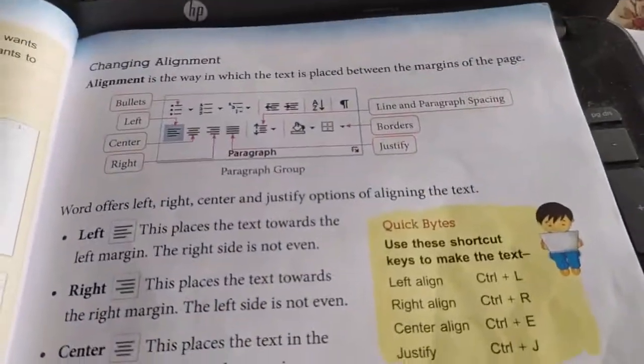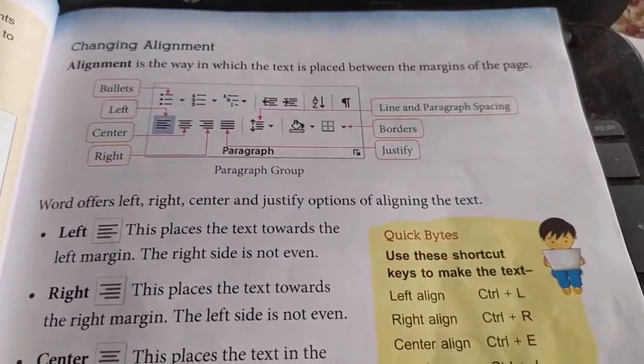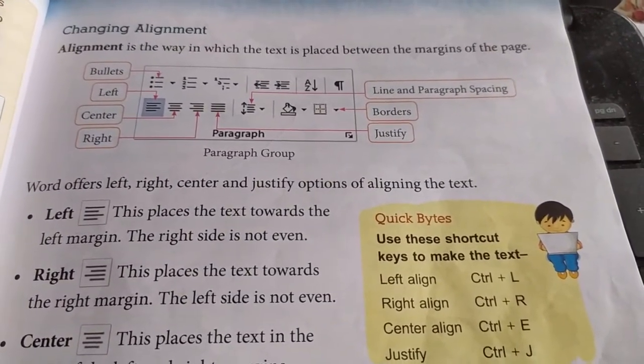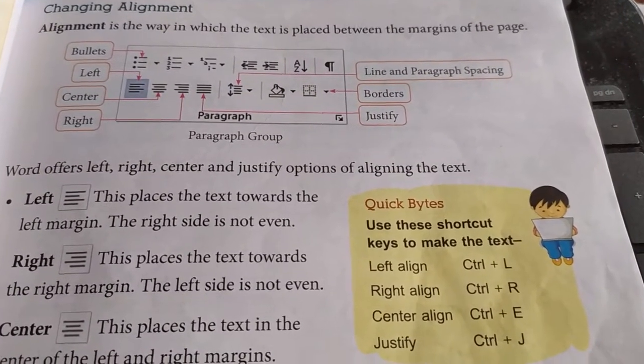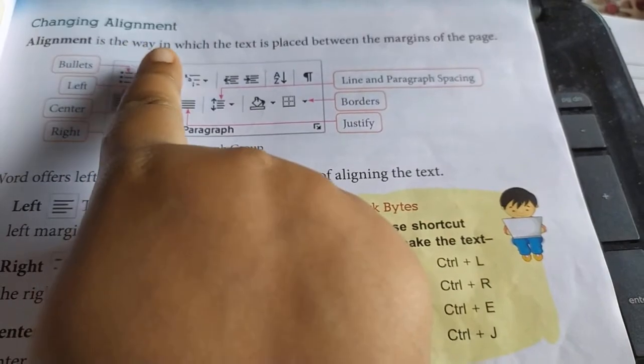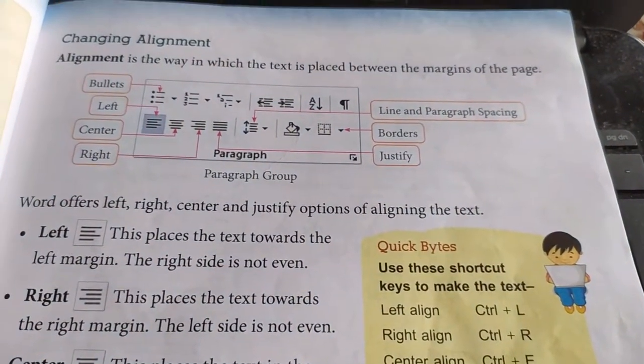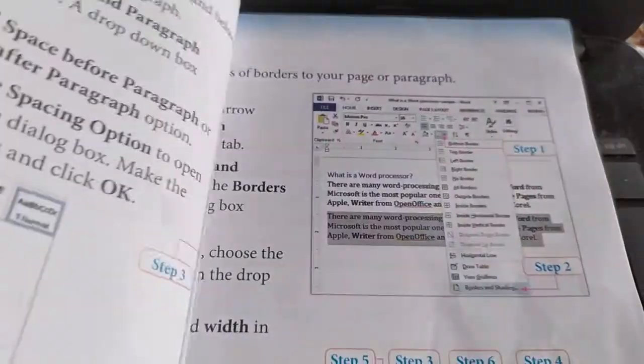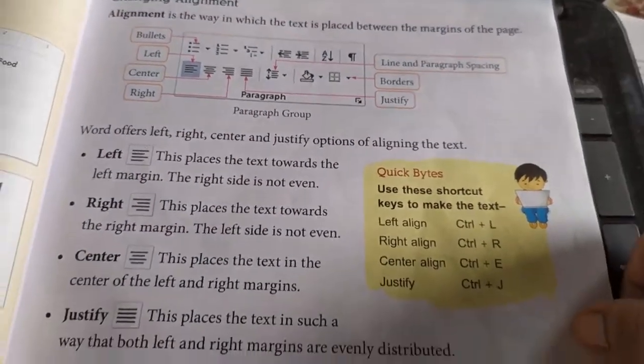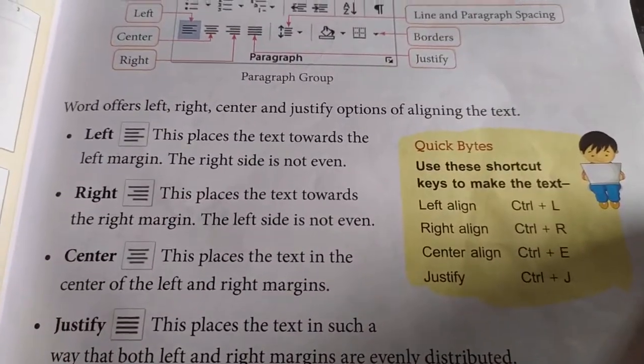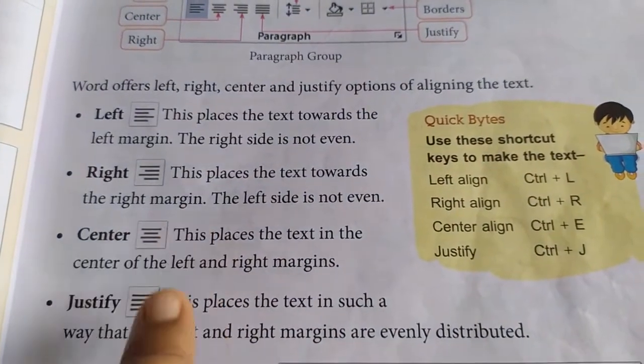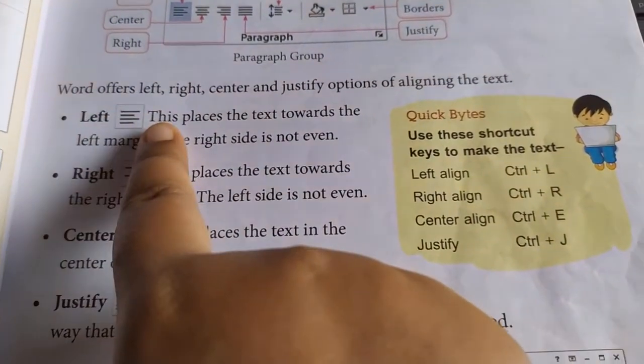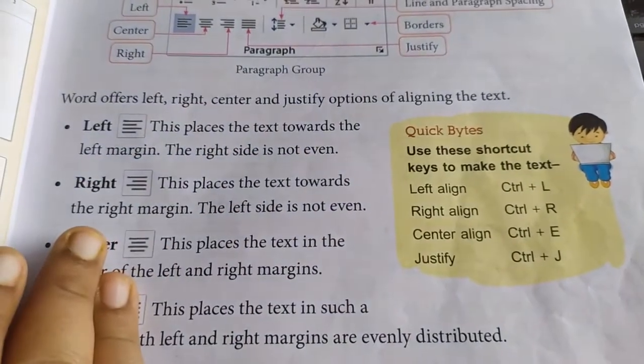First topic is changing alignment. Now what is alignment? Alignment is the way in which the text is placed between the margin of the page. Now how many alignments that the word offer us? Left alignment, right alignment, center alignment and justify. Left means the text will be aligned in the left margin.